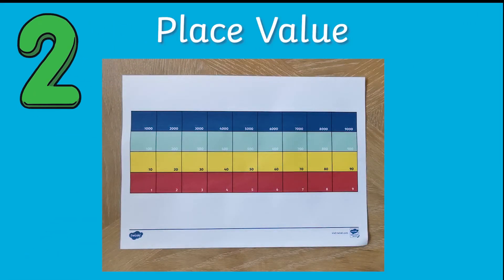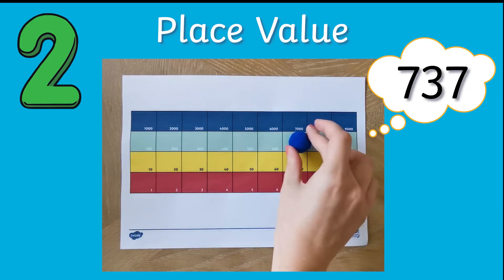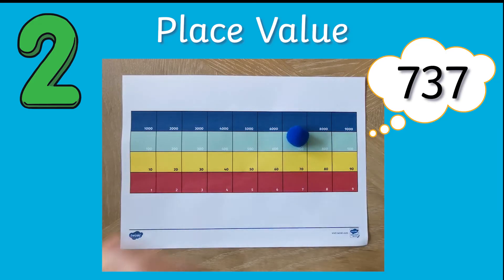Gattegno charts are also great for learning place value. You can give children a number such as seven hundred and thirty-seven and ask them to put a pom-pom on each of the numbers that's needed for it. Seven hundred and thirty-seven.